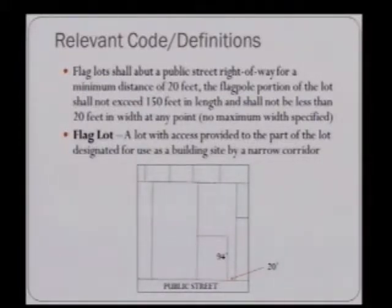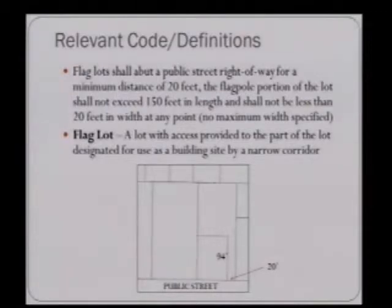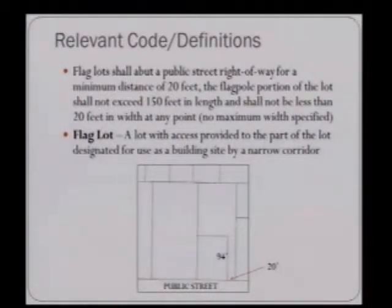A flag lot is defined as a lot with access provided to the part of the lot designated for use as a building site by a narrow corridor. Here is an example of a flag lot. The parcel abuts the public street at a width of 20 feet and remains at 20 feet until it reaches the building site in the rear. That narrow corridor is 94 feet in length, which is less than the maximum 150.